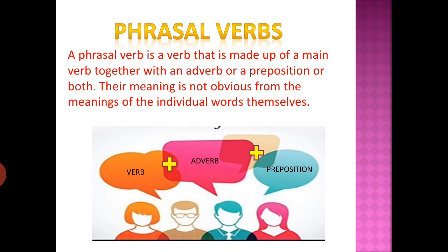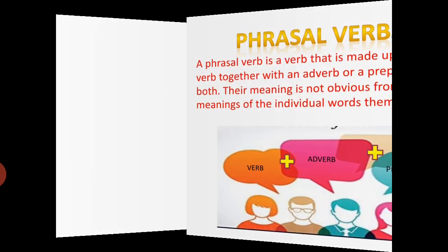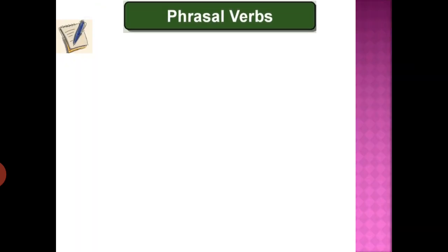Phrasal verbs come as a combination of a main verb together with an adverb, or a main verb together with a preposition, or a main verb together with both a preposition and an adverb. A phrasal verb is a combination of a verb plus a particle — this particle is what we refer to as a preposition or an adverb.